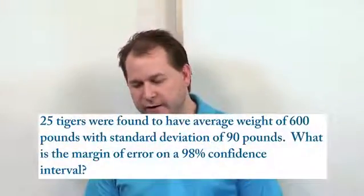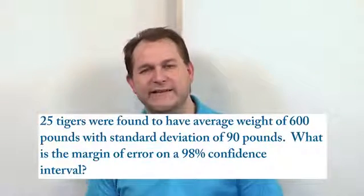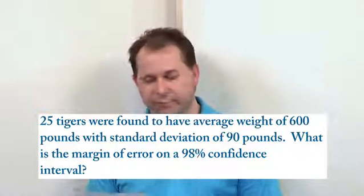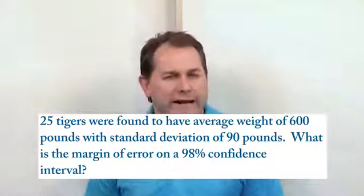The problem we're going to work here says we have 25 tigers, and they were found to have an average weight of 600 pounds with a standard deviation of 90 pounds. What is the margin of error on a 98% confidence interval for this data? So, this is a great example